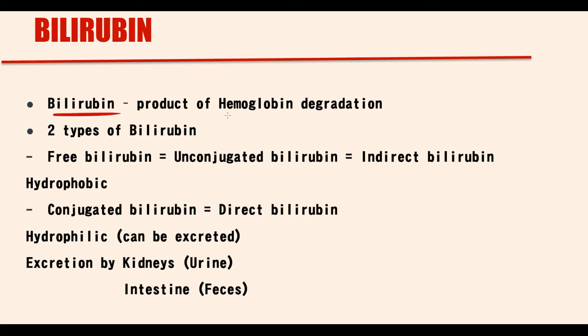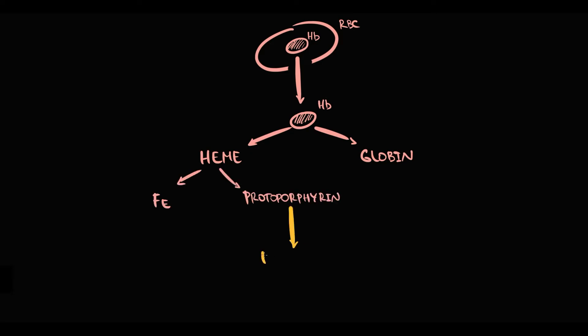Bilirubin is a product of hemoglobin degradation. To explain this, recall that in the blood we have red blood cells, and the major functional component of red blood cells is hemoglobin. Hemoglobin consists of heme and globin, and heme is iron complexed with protoporphyrin. Oxidation of protoporphyrin results in formation of bilirubin.